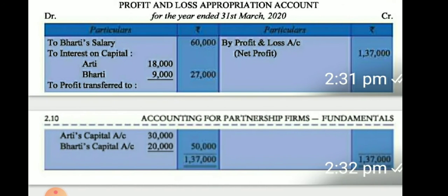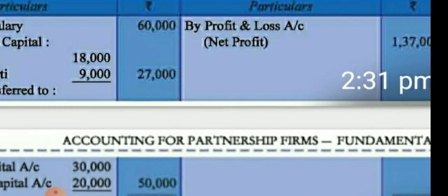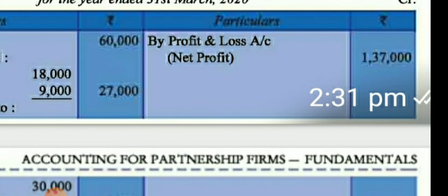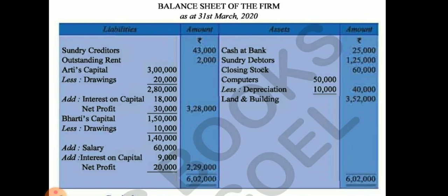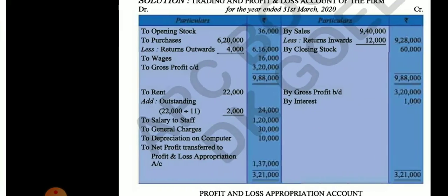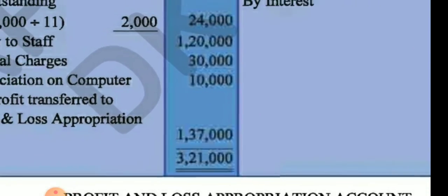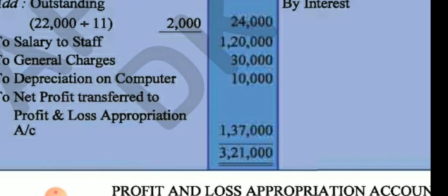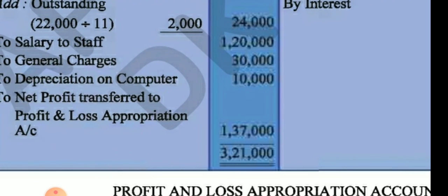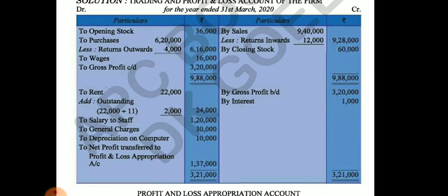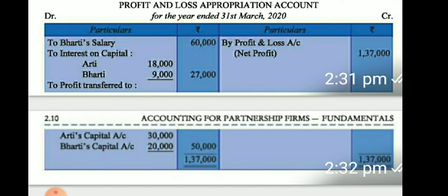Now we are going to make the P&L Appropriation account. The profit coming from the P&L account — ₹1,37,000 — is transferred into the P&L Appropriation account. So by P&L Appropriation ₹1,37,000. This is the balance of the P&L account that is transferred to P&L Appropriation.